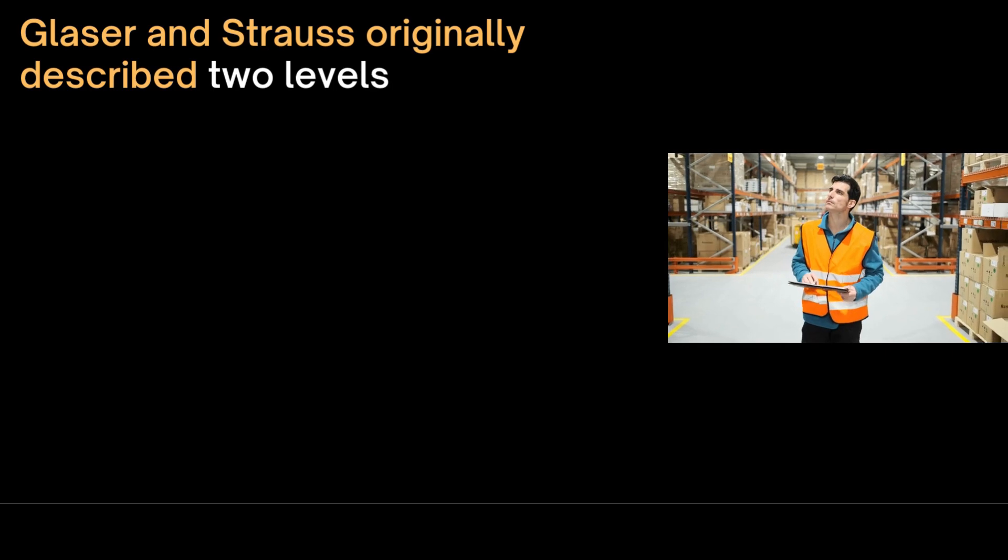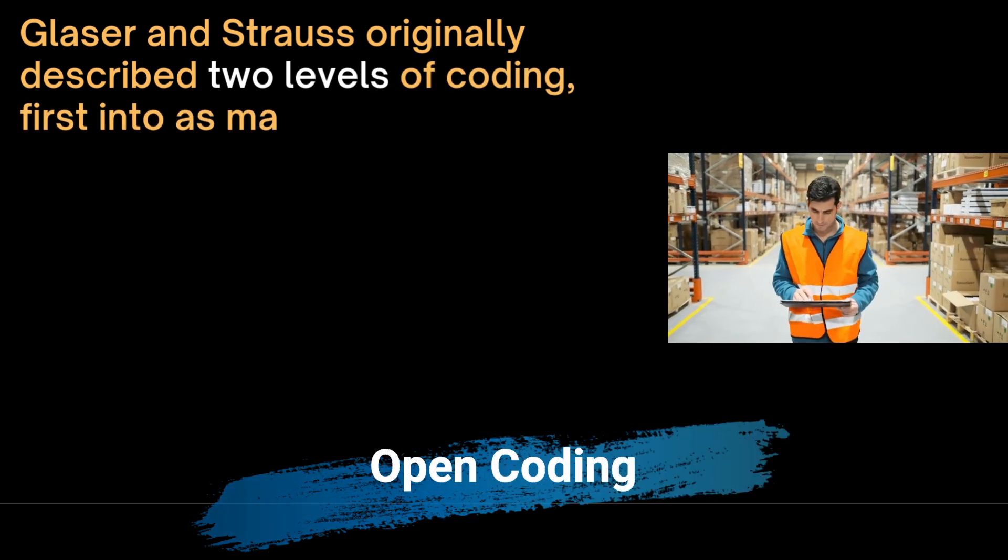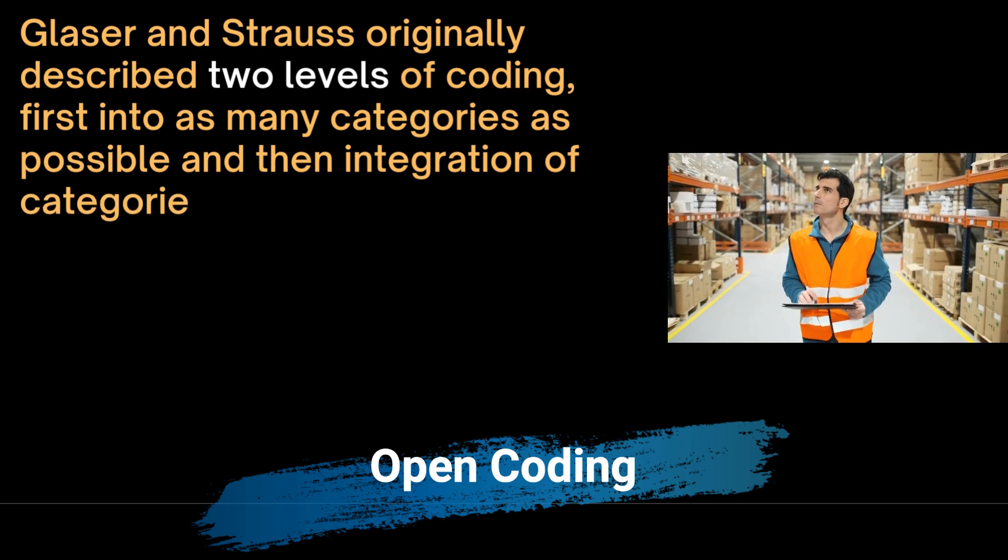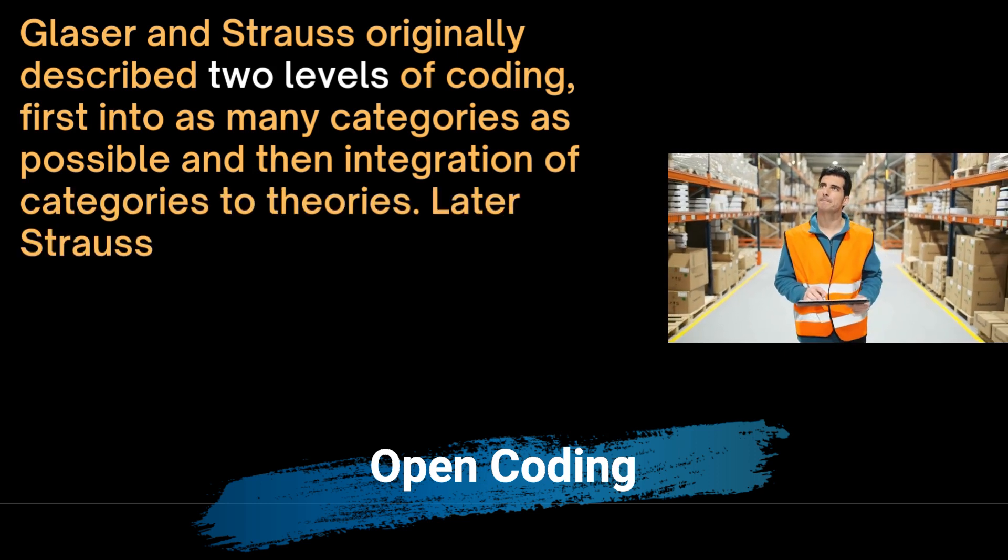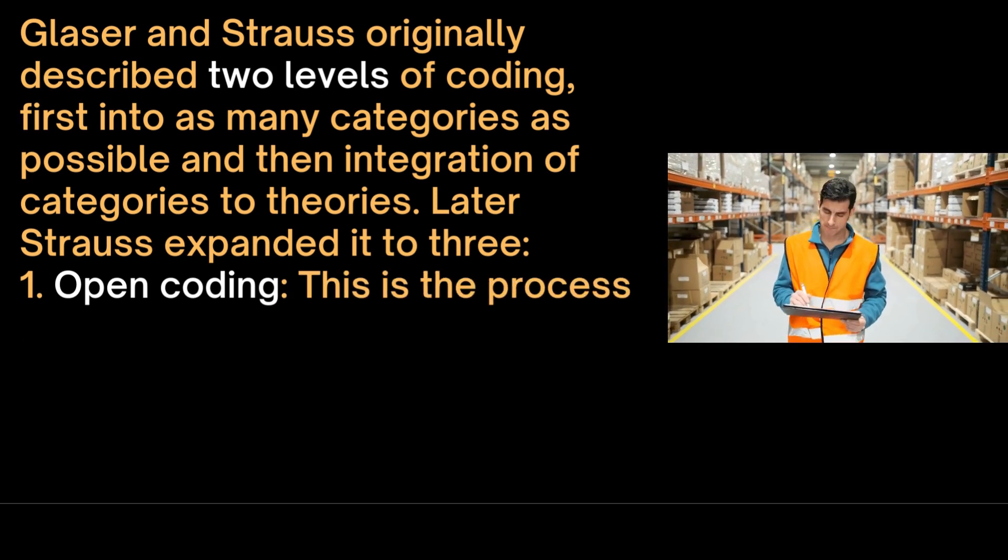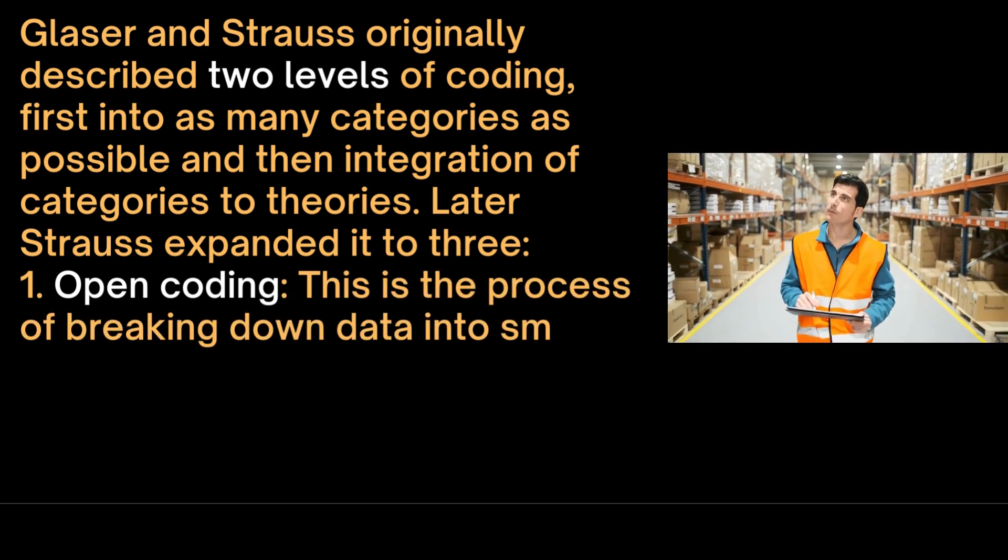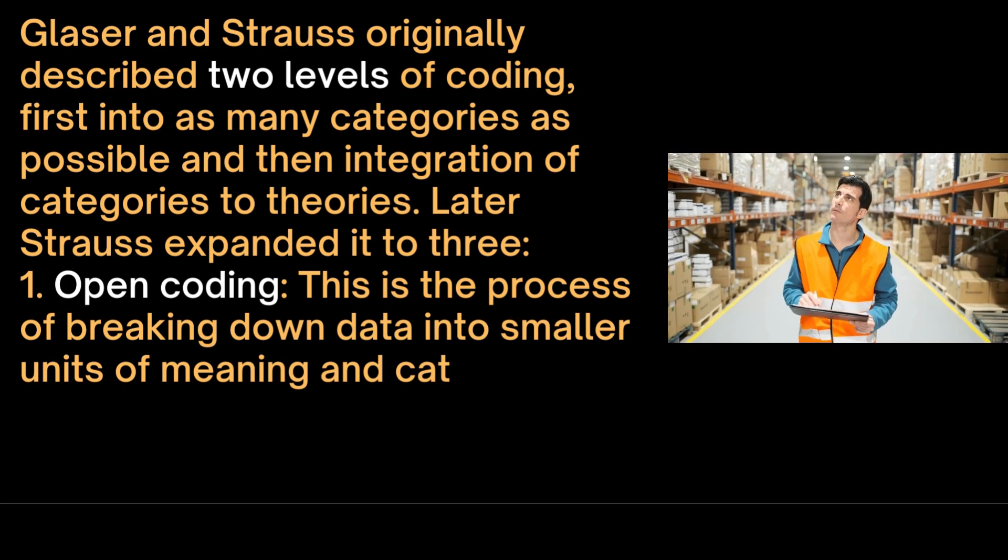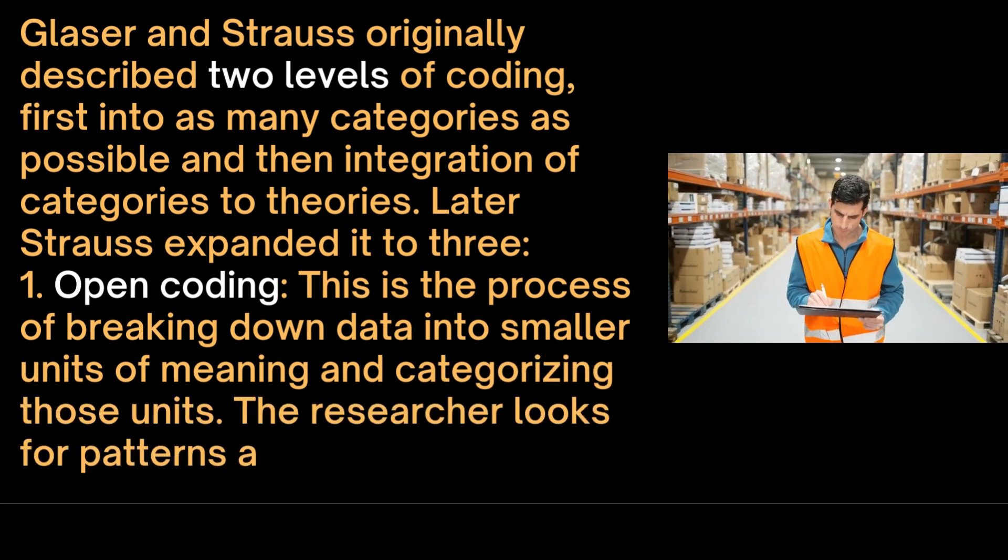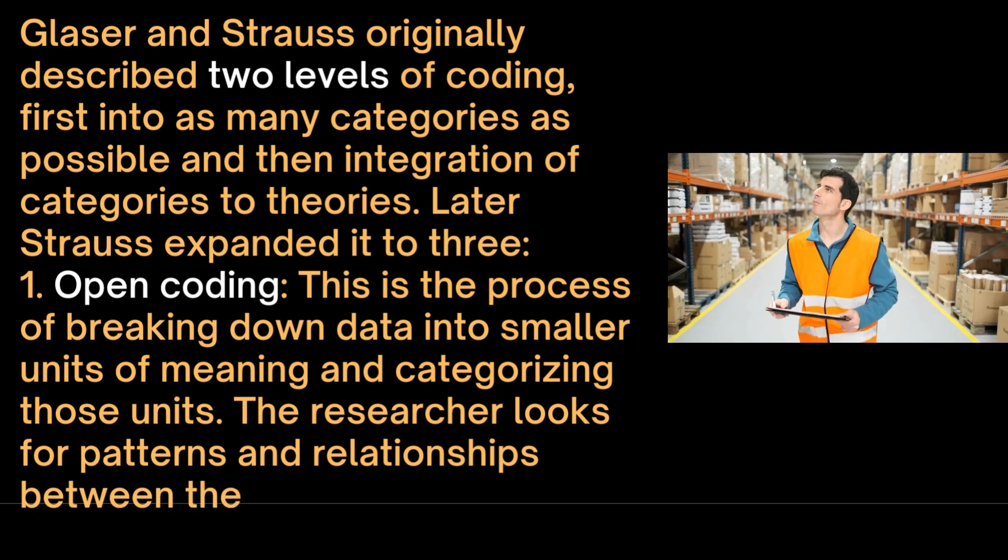Glaser and Strauss originally described two levels of coding. First into as many categories as possible and then integration of categories to theories. Later Strauss expanded it to three levels of coding. Firstly open coding which is the process of breaking down data into smaller units of meaning and categorizing those units. The researcher looks for patterns and relationships between the codes.